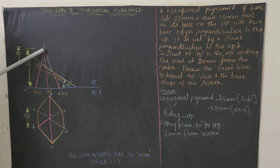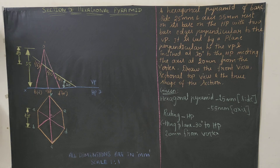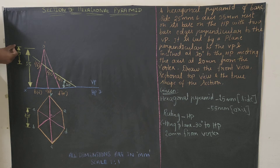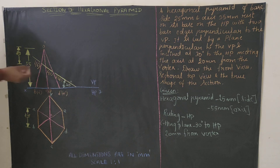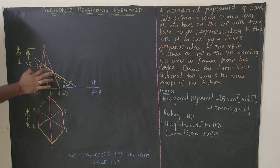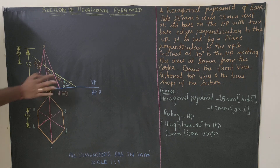Now I will explain how to draw the cutting plane. We know O-dash is the apex. From the apex, for 20mm mark a point. Draw an auxiliary line so you can dimension 20mm — the distance from apex to cutting plane is 20mm. From that point draw a line inclined at 30 degrees to HP. This line is the cutting plane, and it will be cutting the slant edges at various points.